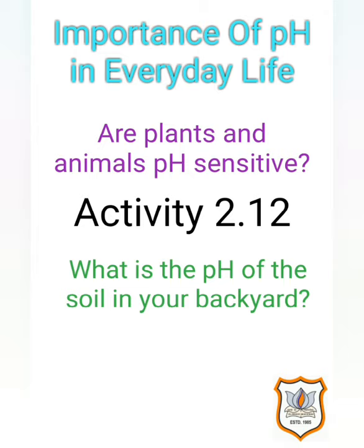Living organisms can survive only in a narrow range of pH change. When the pH of rain water is less than 5.6, it is known as acid rain. When acid rain flows into the rivers, it lowers the pH of the river water, and the survival of aquatic life in such rivers definitely becomes difficult. What is the pH of the soil in our garden? Plants require a specific pH range for their healthy growth.